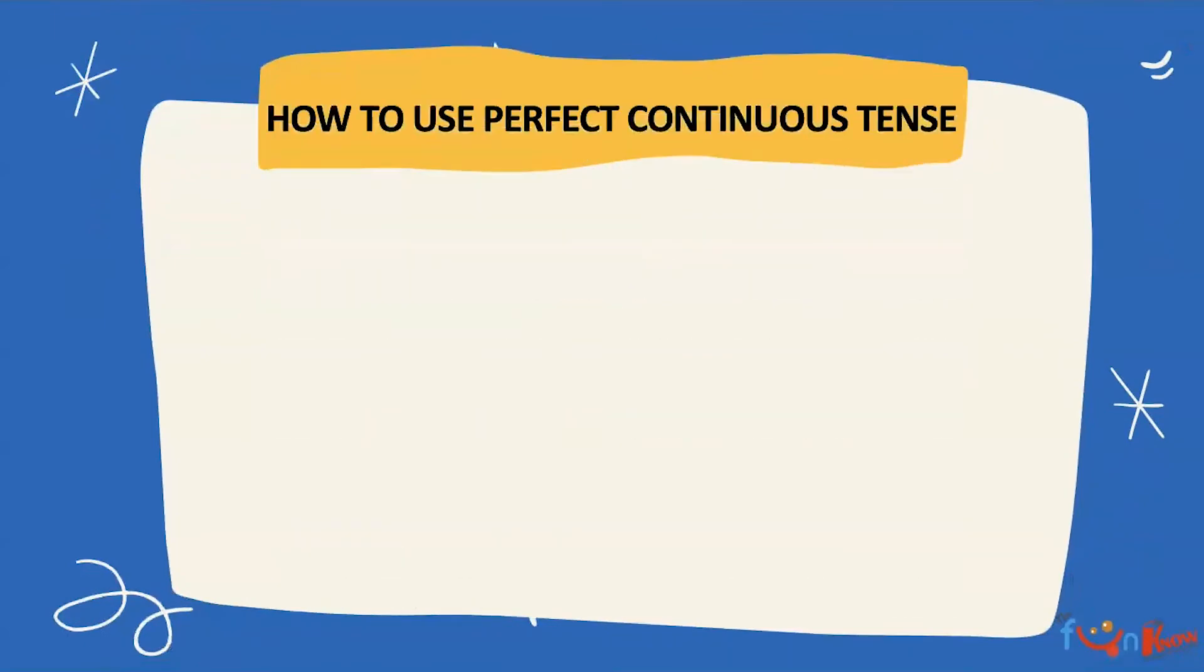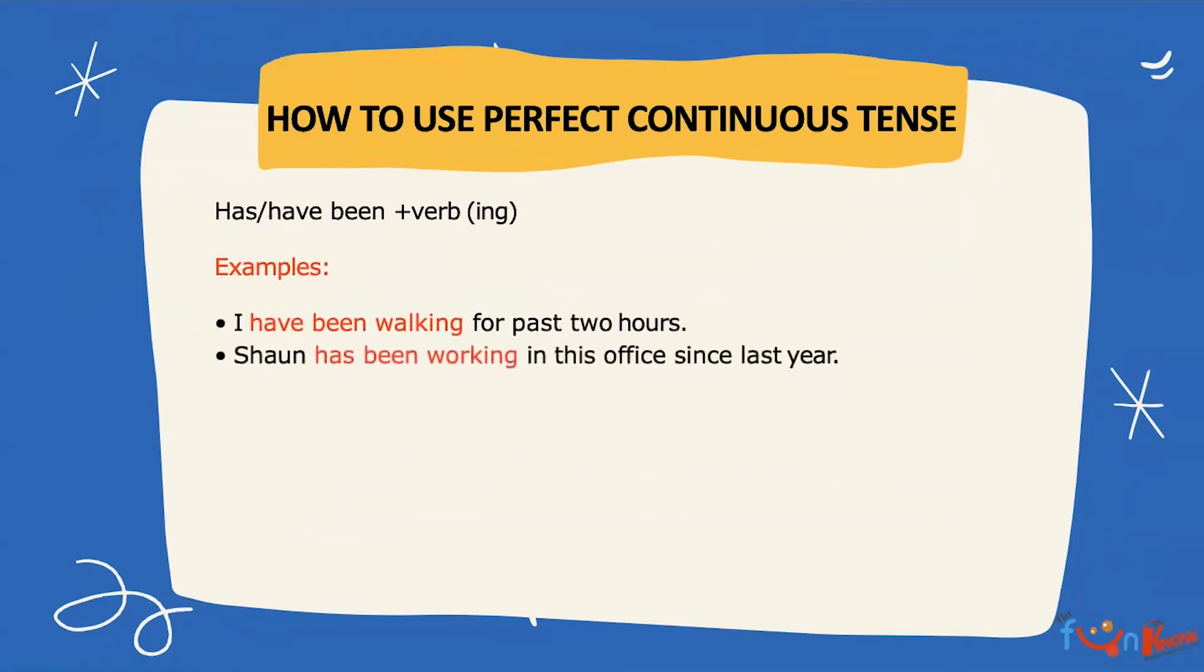And how do we construct a perfect continuous tense? We have has or have with been plus the verb with ing. Let's see some more examples. I have been walking for past two hours. Sean has been working in this office since last year. It has been lying on the bed since morning. He has been saving money for the past one year.